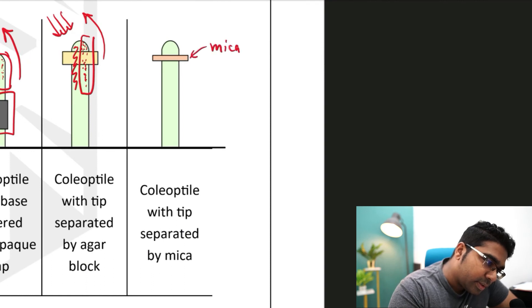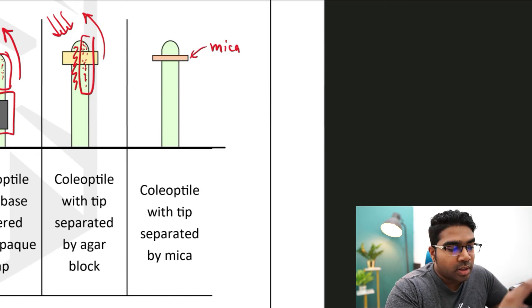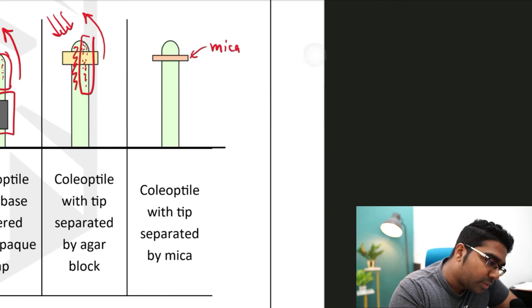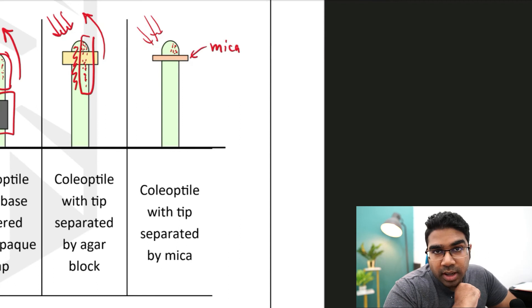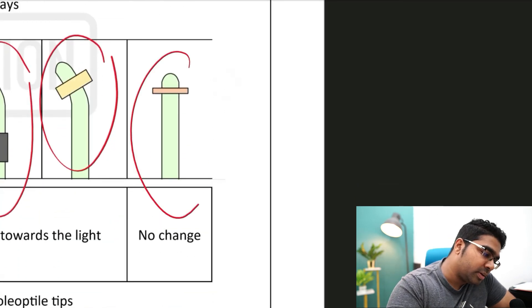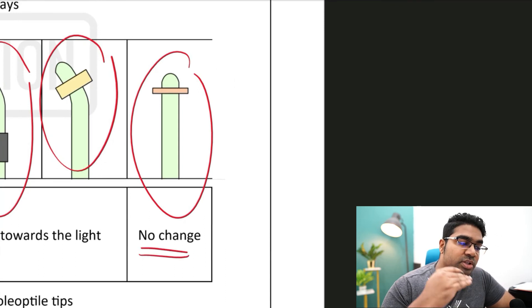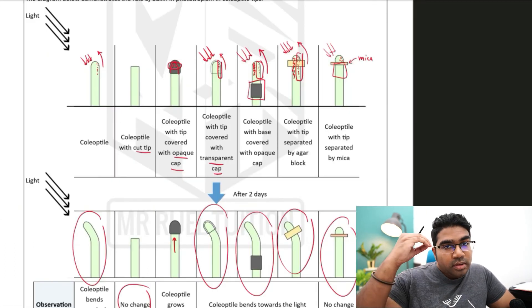In the next scenario, a piece of mica separates the coleoptile tip from the rest of the coleoptile. Mica is not able to dissolve or transfer the hormone downward. So even though auxin is produced at the tip and moves away from the light to the other side, it does not reach the zone of cell elongation. Therefore nothing happens — absolutely no change — because the auxin does not reach the zone of cell elongation.